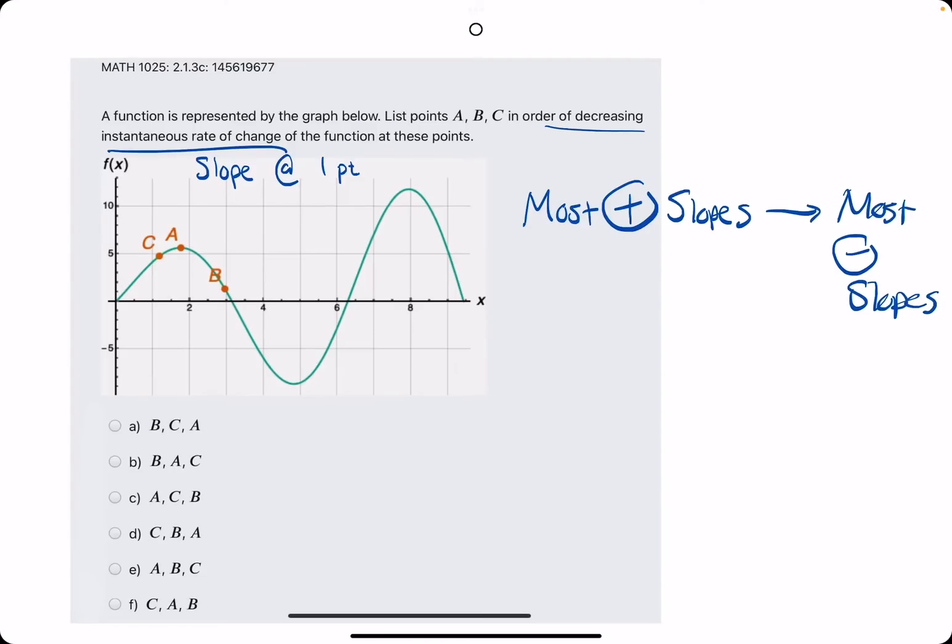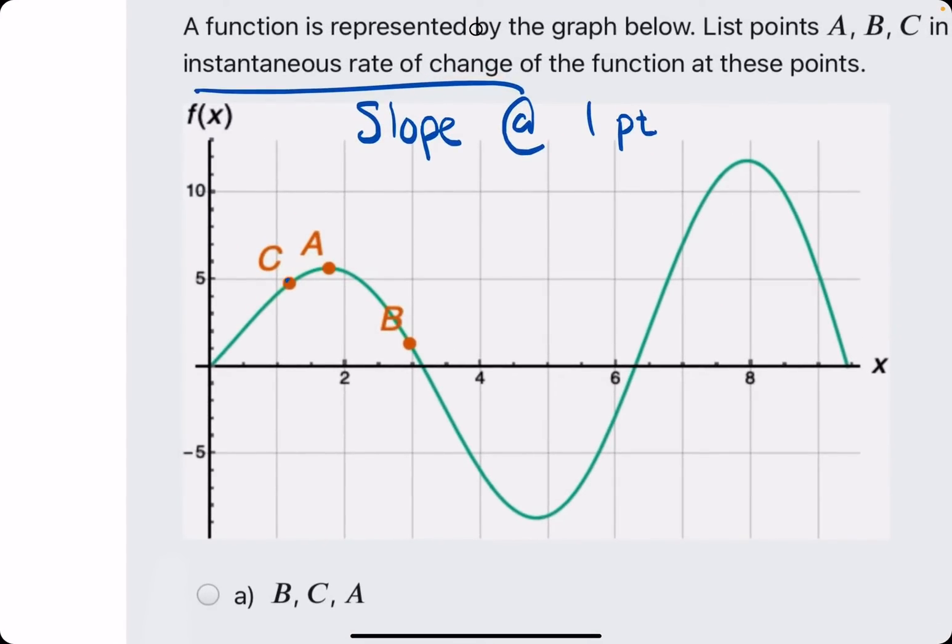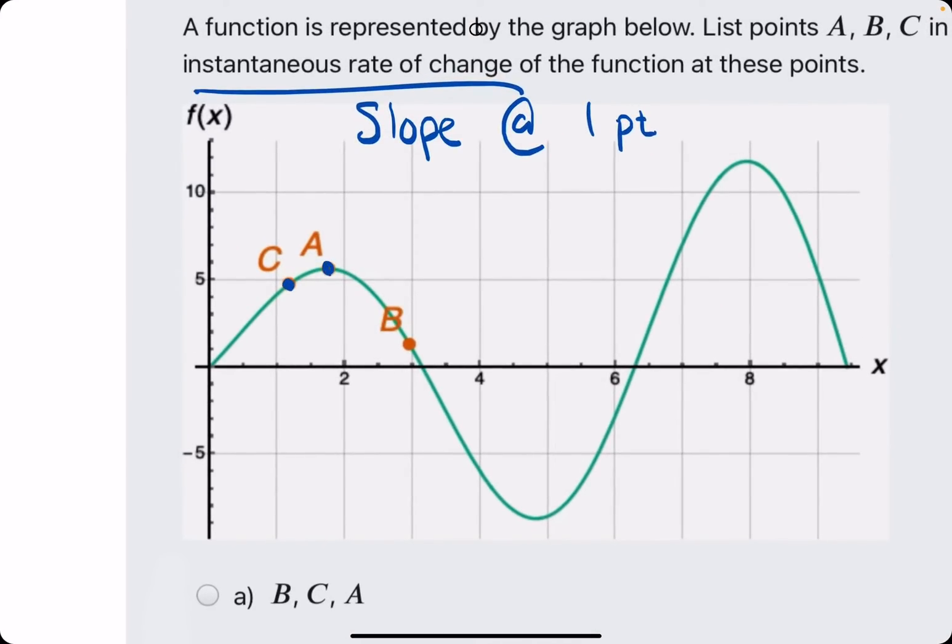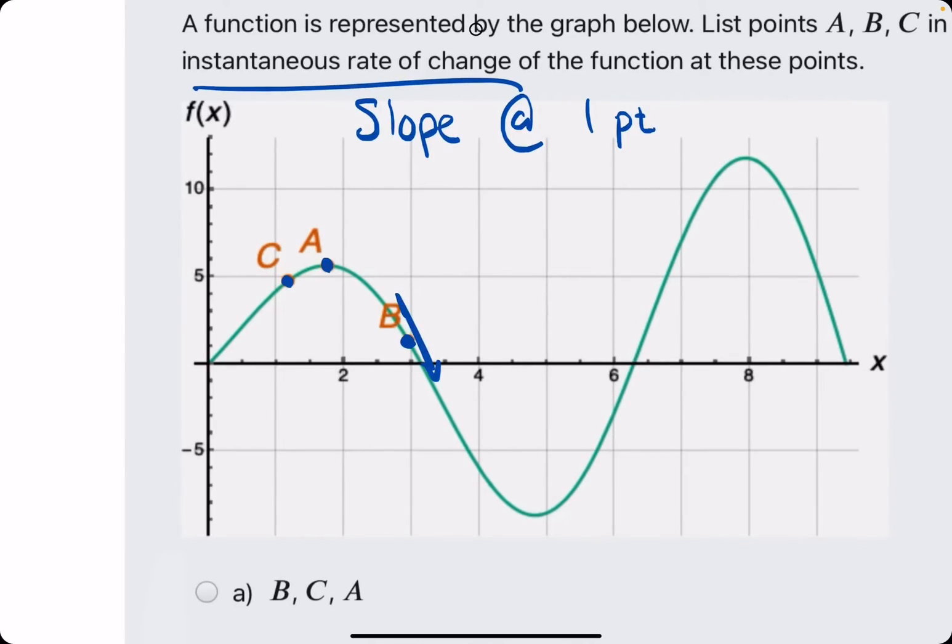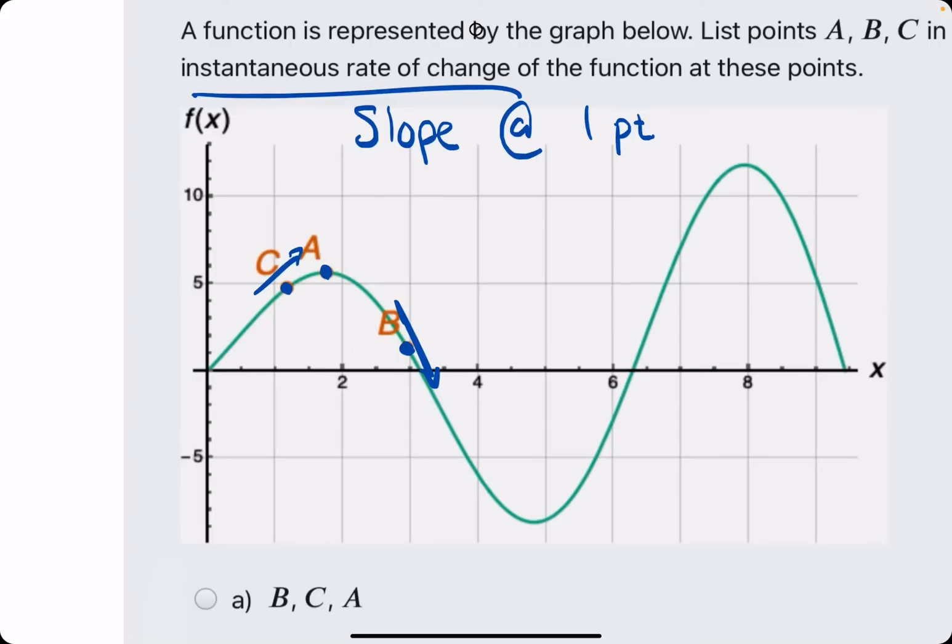So really, the first step is identify which of these points lie on a positive slope and which ones lie on a negative slope. C is definitely lying on a very positive slope because the function is increasing at the time that C is on the graph. And then B is on a very negative slope. So C is positive, B is negative.